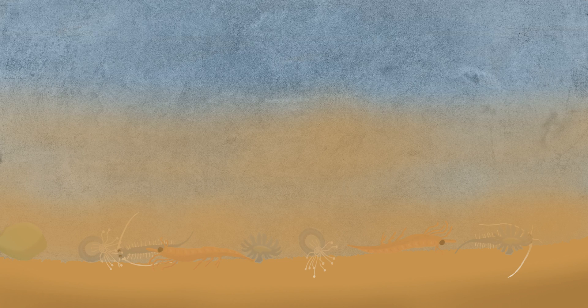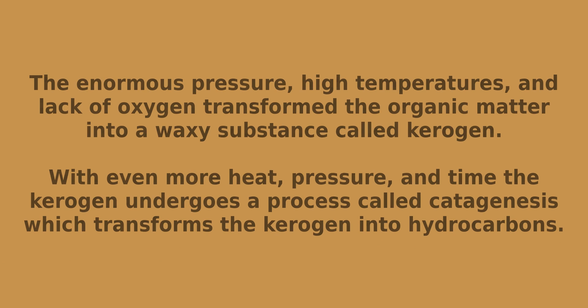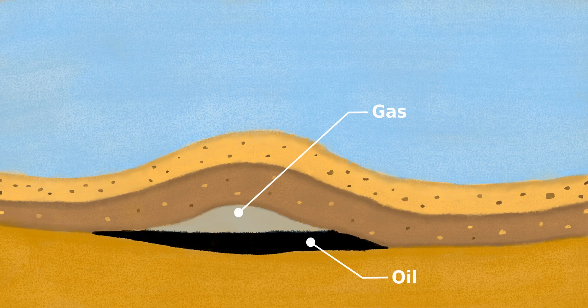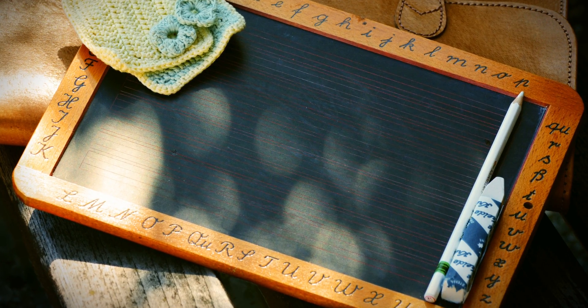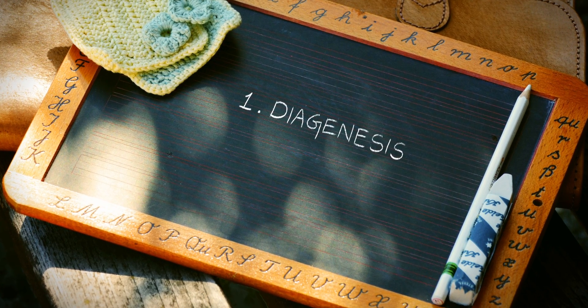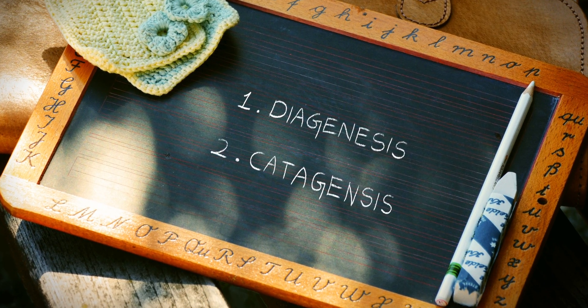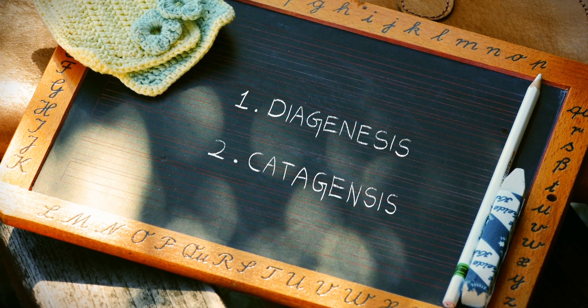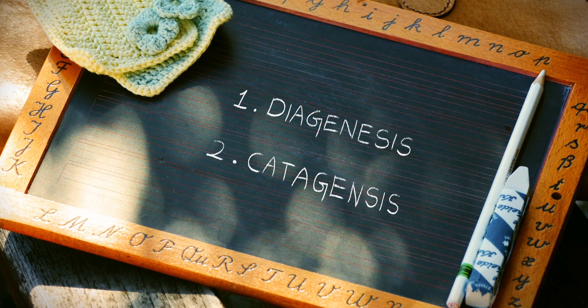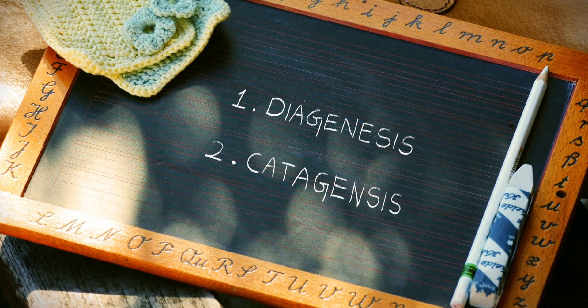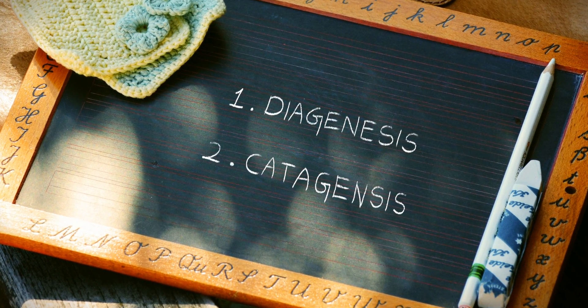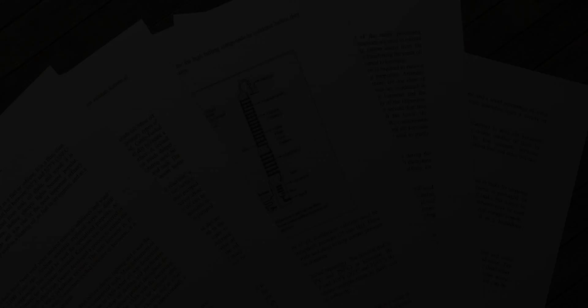Crude oil itself is derived from decayed organisms that were buried along with the sediments of early geological eras. Over tens of millions of years, this organic residue was converted to crude oil by a pair of complex chemical processes known as diagenesis and catagenesis. The combination of these complex reactions creates a hydrocarbon mixture known as petroleum or crude oil.